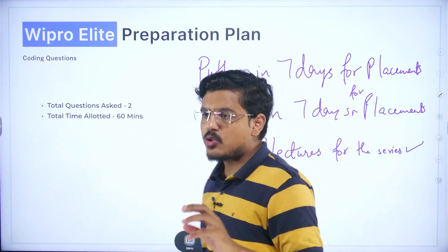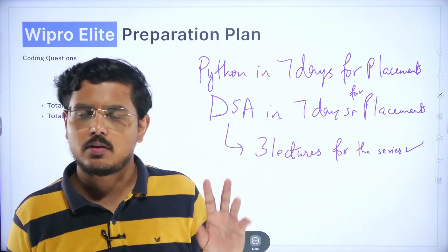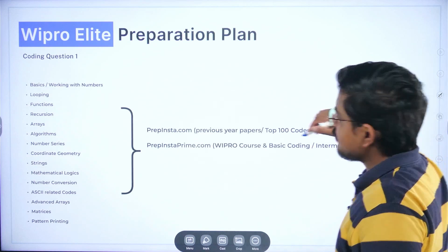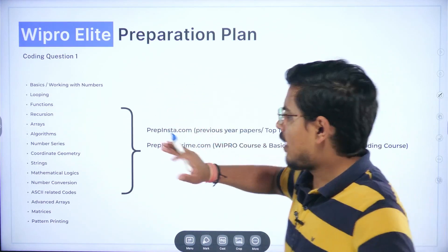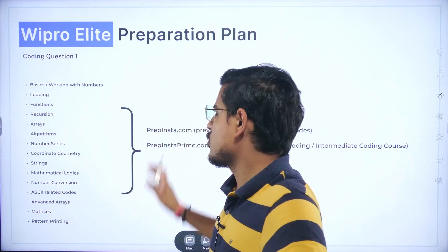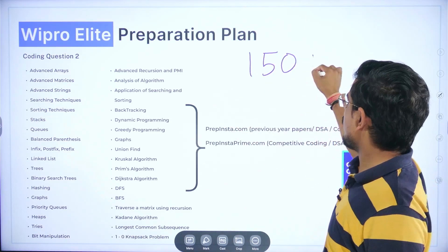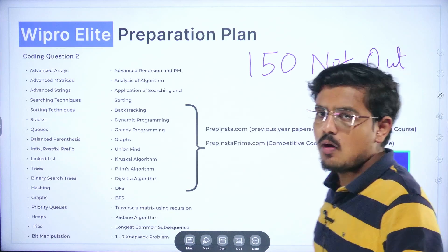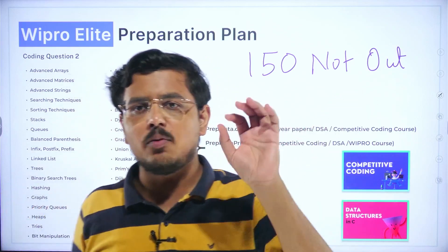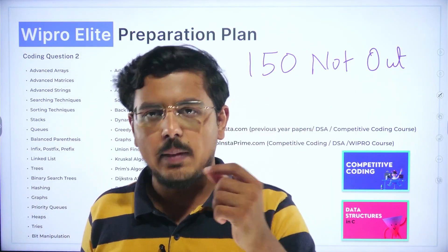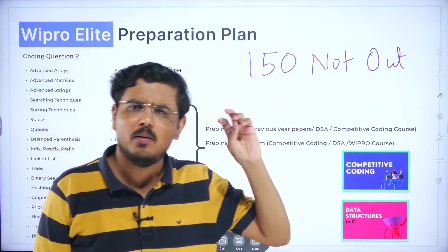If you want to learn DSA from the very basic in a structured manner for the longer term, go to PrepInsta Prime for the DSA course. For coding question 1, top 100 codes can work — covering looping, algorithms, coordinates, geometry, functions, and recursion. But if you want a combined strategy for both coding questions, 150 Not Out is the way. This list is available in the description and on PrepInsta.com for free — just 150 questions. Practice them, have them on your fingernails, and believe me, if you revise these questions well, you can crack any company: Oracle, Adobe, Microsoft and more.